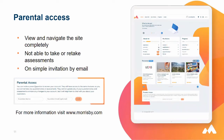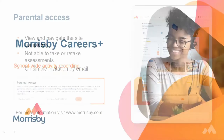A very important tool we believe in at Morrisby is the parental access tool. Students can invite parents and guardians to log on and see their profile by adding their email addresses. Parents can't change anything, but they can look around and see the career options displayed for their son or daughter, view their results, and look in their locker. It's a great way to invite parents into the world of careers, and it's really easy to use.